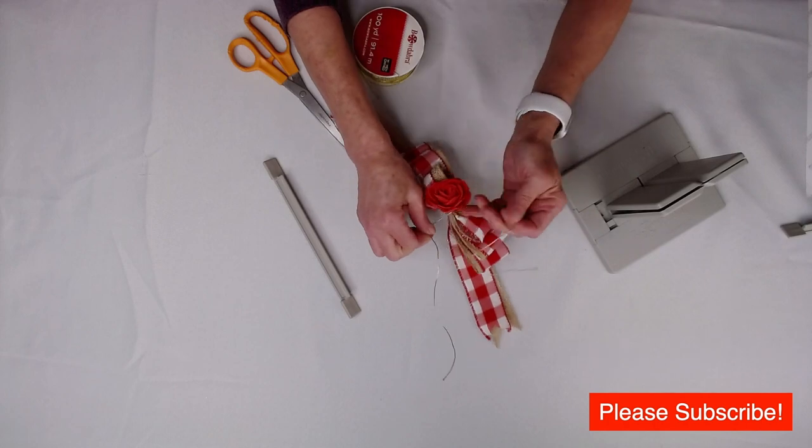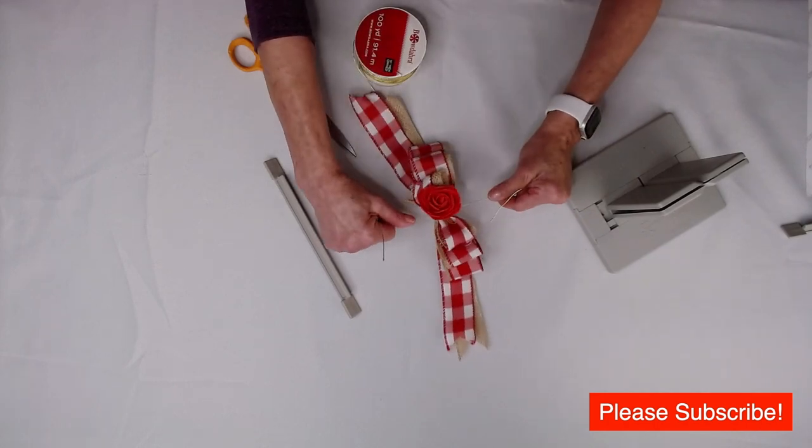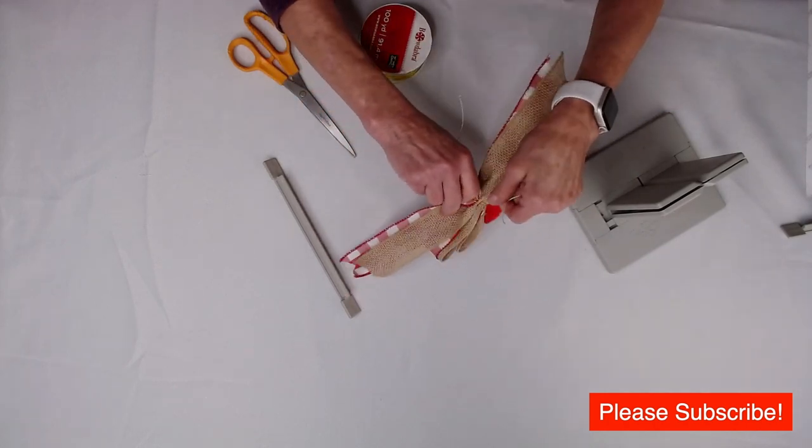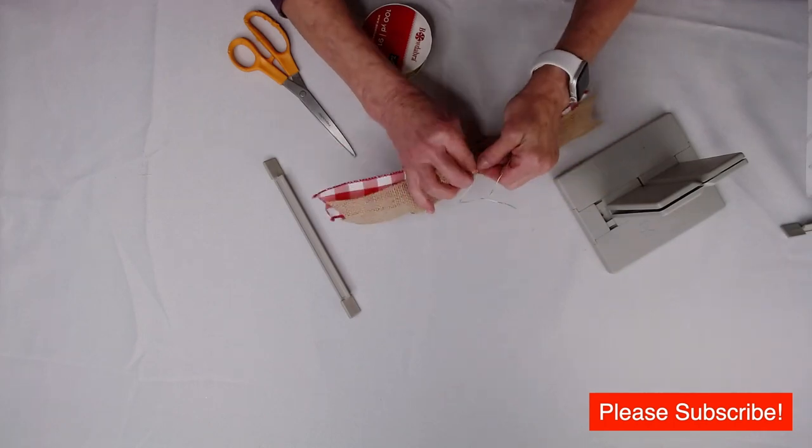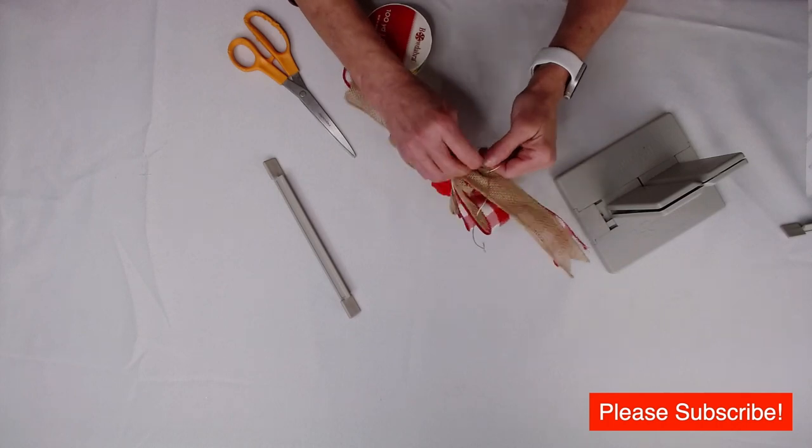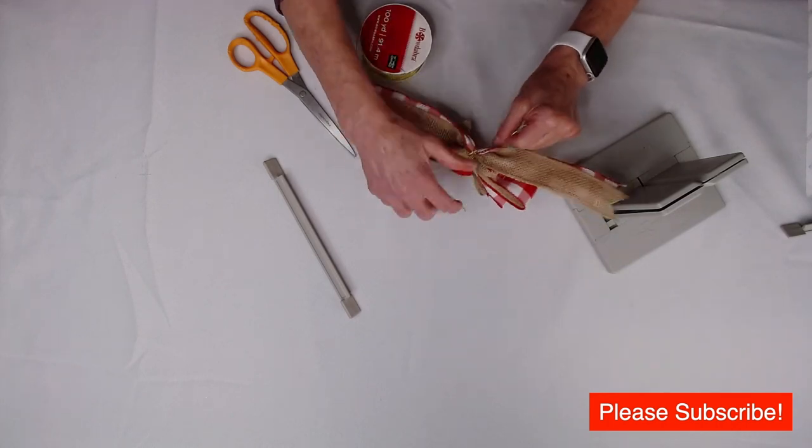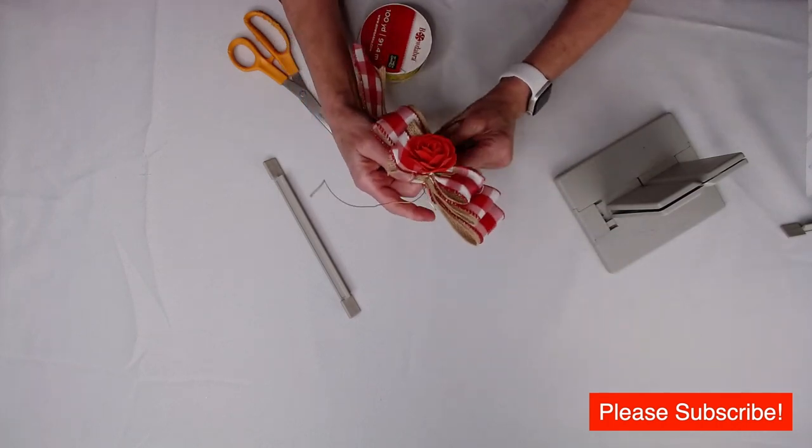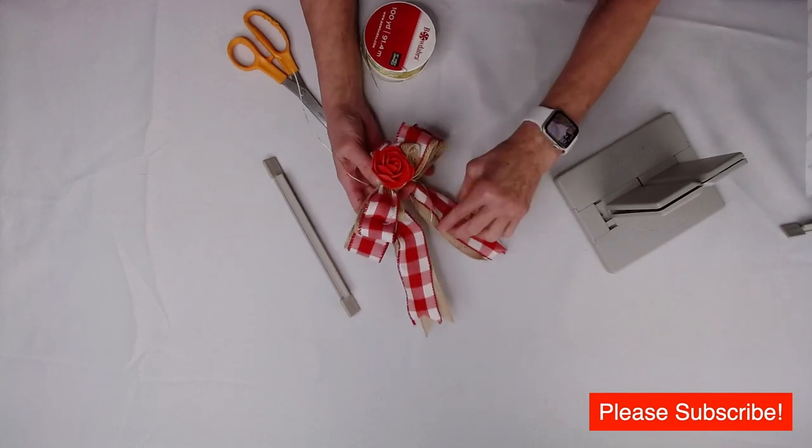You've got quite a bit of ribbon here because the burlap is such a thick ribbon. We're just going to tie a knot and tie another knot. Now I'm just going to take the ends, bring those down here.